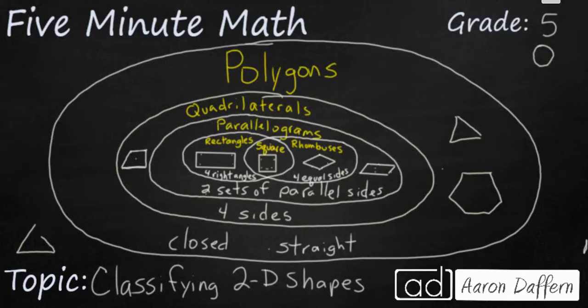So a square also is a parallelogram because it has two sets of parallel sides. But even parallelograms are within the larger circle of quadrilaterals. So a square is not only a rectangle and a rhombus and a parallelogram it is also a quadrilateral because it has four sides and it is also a polygon because it is closed and has straight sides.